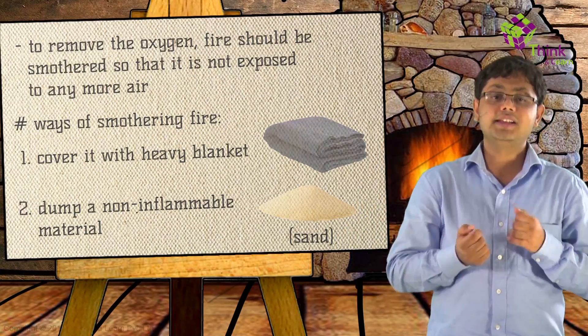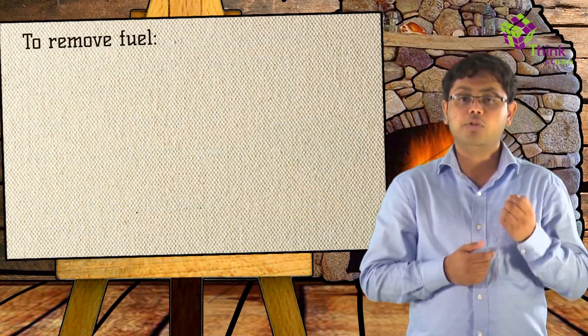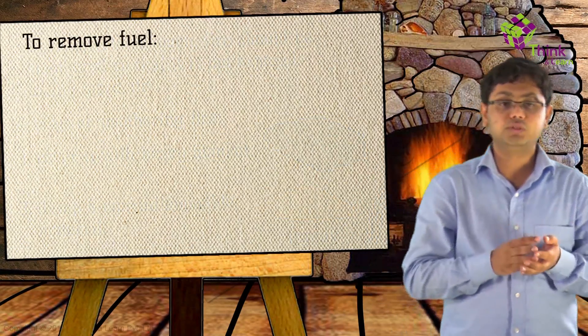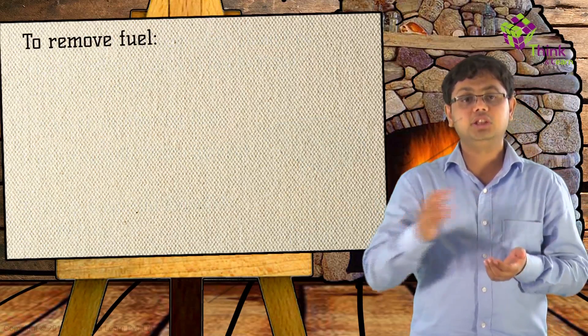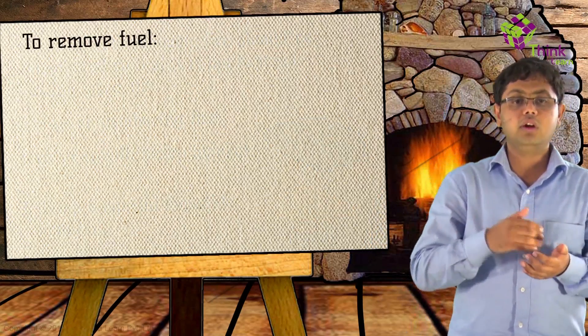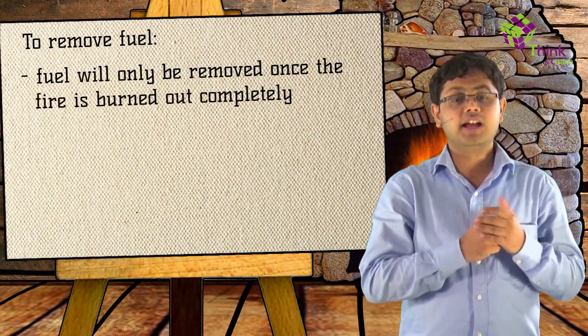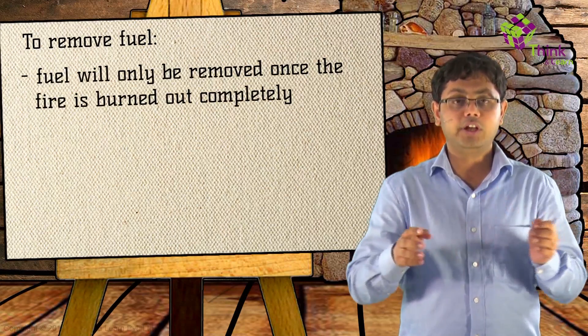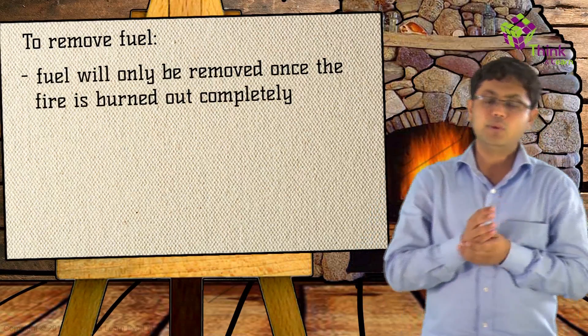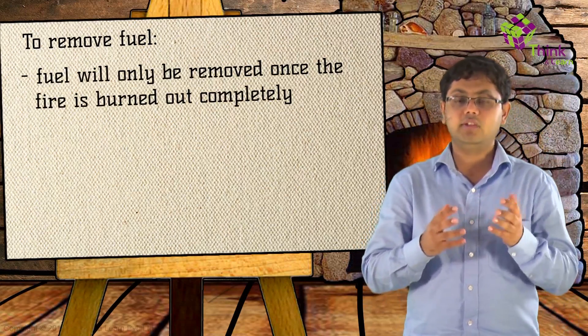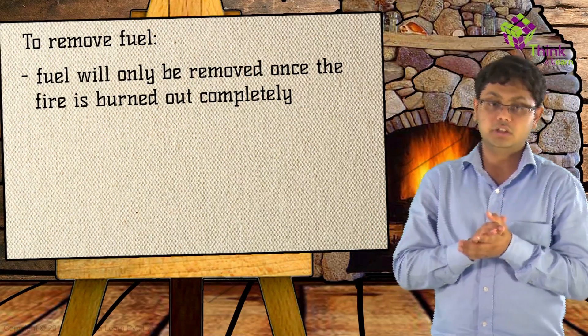And removing the fuel is the most difficult approach for most fires. In a house fire, for example, the house itself is a potential fuel. The fuel will only be removed once the fire has actually burned down all of it. Therefore, removing the fuel is not one of the most scientific ways in which you can basically stop the fire.